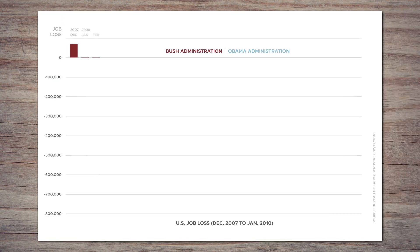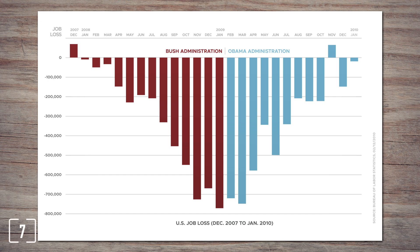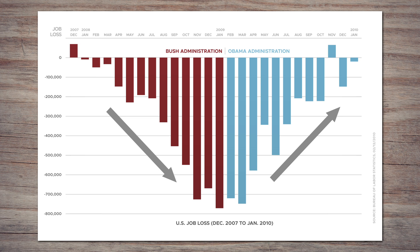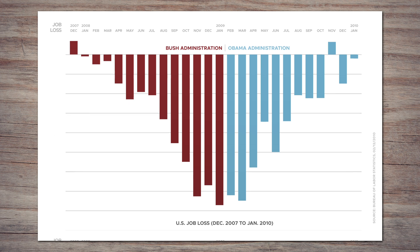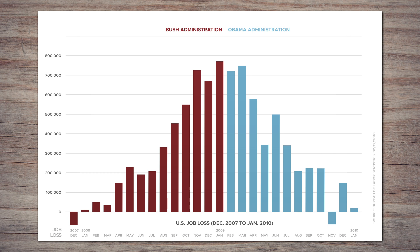Bars can also point down to show that things are getting better. This chart shows the number of jobs lost every month during the financial crisis in the last year of the George W. Bush administration and the first year of Barack Obama being president. There's a clear message: things were getting worse under Bush, and now they're getting better under Obama. You can argue Obama probably didn't have such an immediate impact, but the intent of the chart is to show that he did. These bars have to point down for this to make sense. If they pointed up instead, it would look like something was getting better under Bush and now it's getting worse — fewer jobs lost is better, but up is also better, so pointing up sends a confusing message. The bars would seem to contradict the numbers.